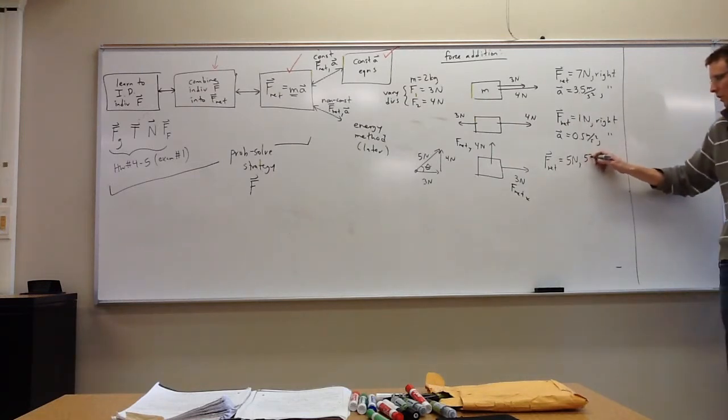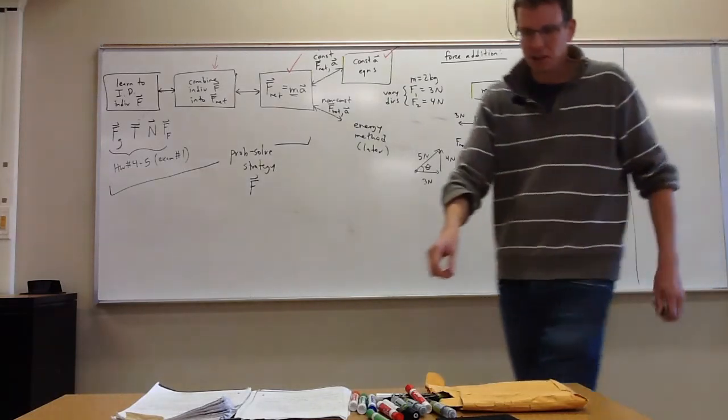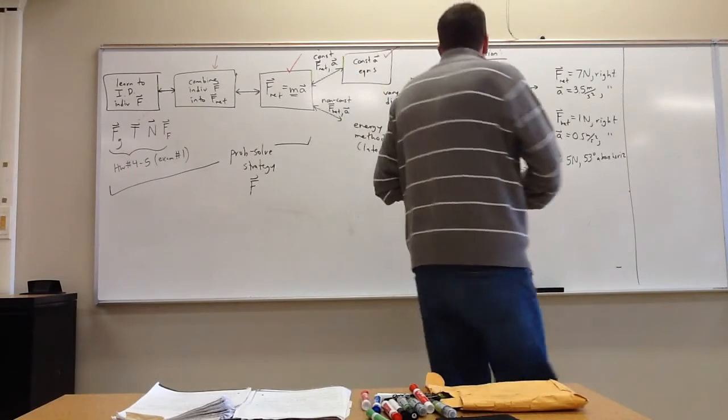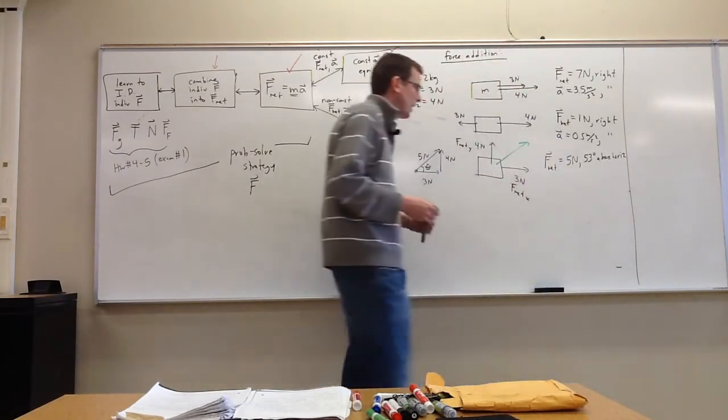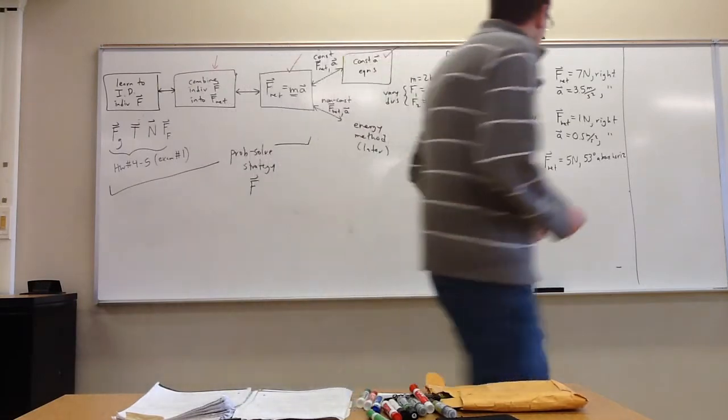So let's call it 53 degrees above horizontal. That's even rounded off still. It's 53 point something. And it makes sense, because if you pull something right and up, you're going to get a rightward and upward force.